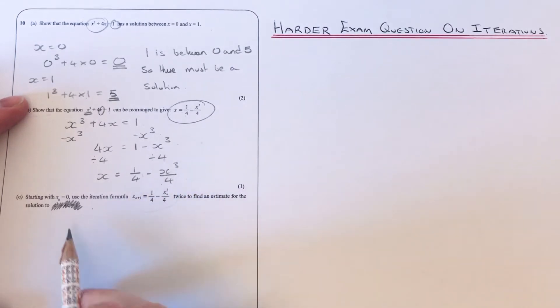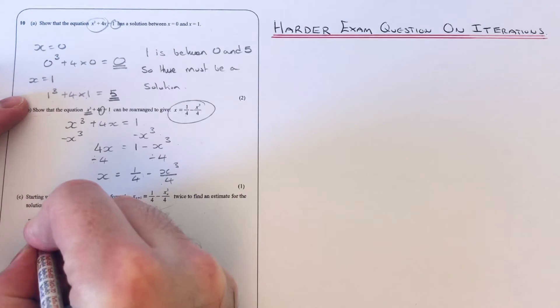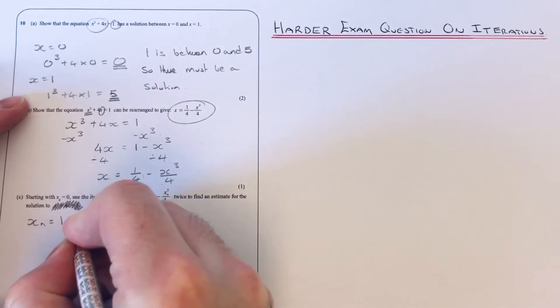Now if you haven't done one of these, you need to know that xₙ means the last term in the sequence, and xₙ₊₁ means the next term in the sequence.